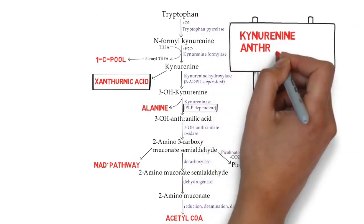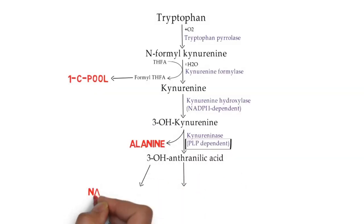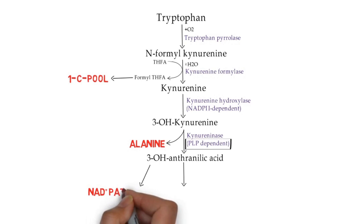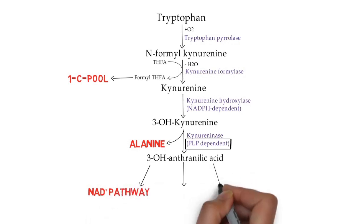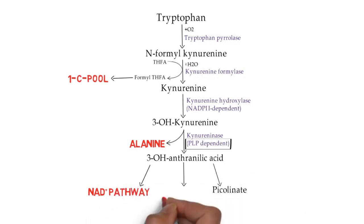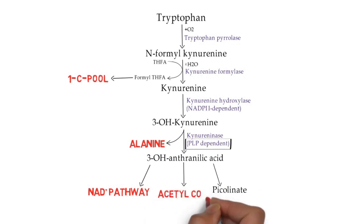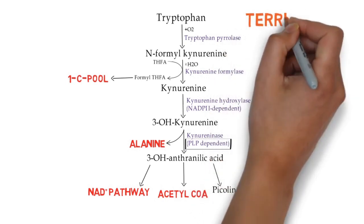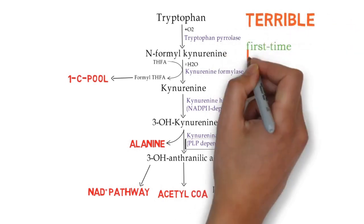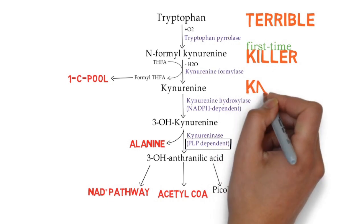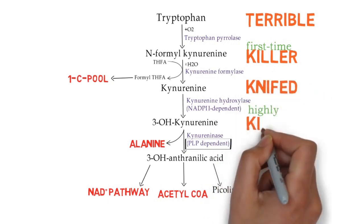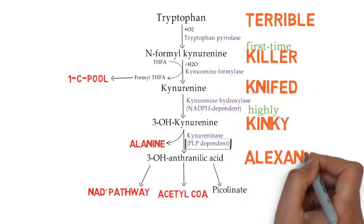2-aminomuconate, in a series of reactions involving reduction, deamination, and decarboxylation, is converted to acetyl coenzyme A. That is the whole kynurenine/anthranilic acid pathway. Now we will see the mnemonic. 3-hydroxy anthranilate can be converted into three things: NAD formation pathway, picolinate formation, and formation of acetyl coenzyme A.